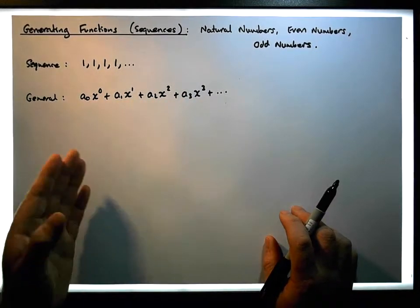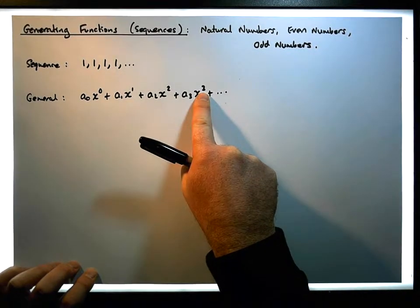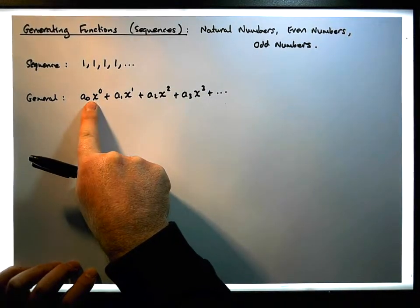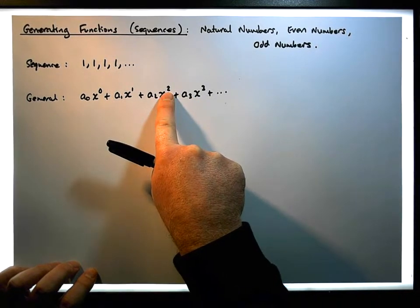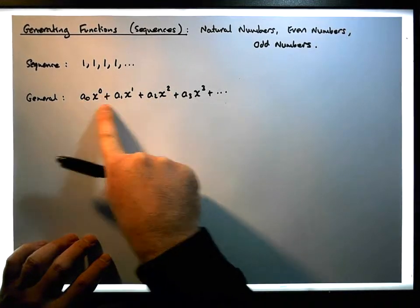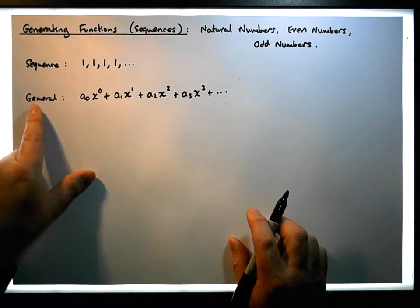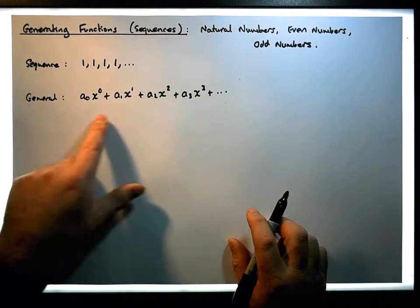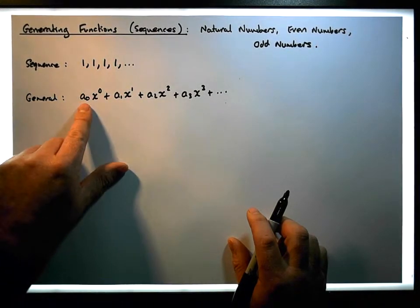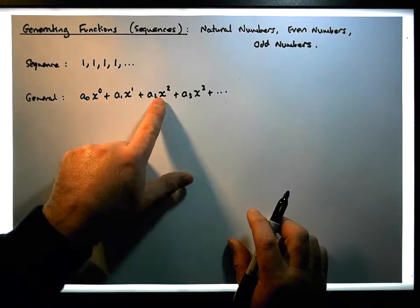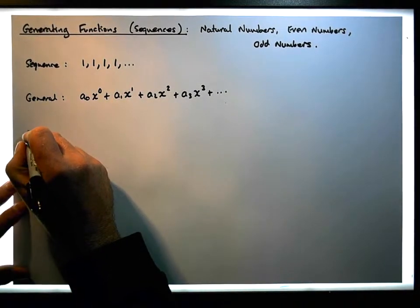These powers in this particular power series represent a positional system. This power is a zero because we're starting to count from zero — this is the first position, the second, the third, the fourth. So the powers actually tell us the position we are currently in within the power series. What we want to do is convert this particular sequence into its power series, and for each term in the sequence, we put that term as a coefficient in the right position in the power series.